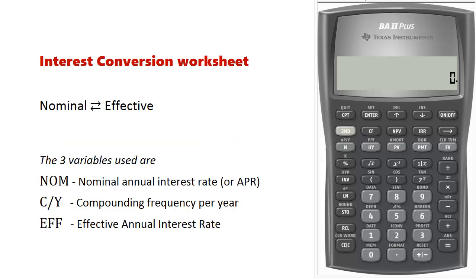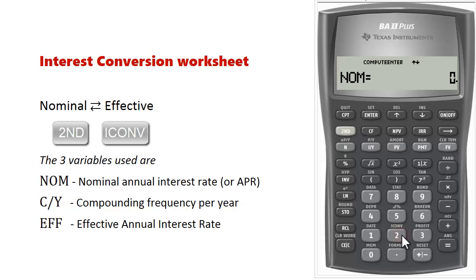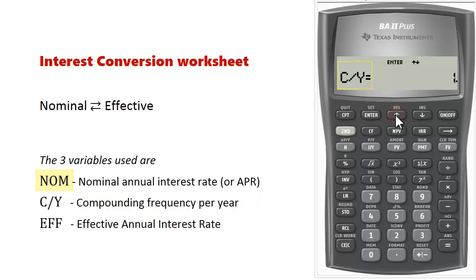The three variables used on the interest conversion worksheet can be found by pressing 2nd, ICONV (interest conversion) on the BA2 Plus calculator. The three variables are: NOM (nominal), CY (compounding frequency per year) which appears when you scroll up, and then scrolling up again gives EFF (effective annual interest rate).